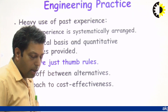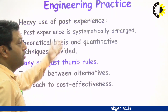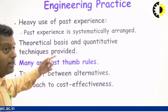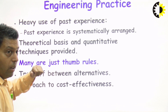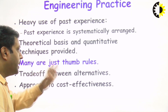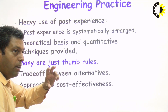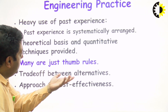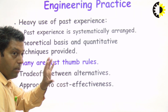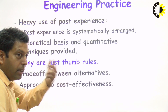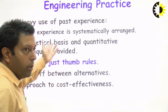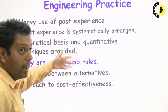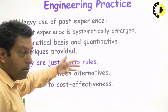Engineering practices involve heavy use of past experiences — our previous experiences are systematically arranged. A real-life example is cooking food: the contents of every ingredient, the burner level, and the flame level all affect the quality and taste of the food. Similarly in software engineering, past experiences are systematically arranged — how to do things, in what sequence, in what order, what volume, how much time will go into the work.